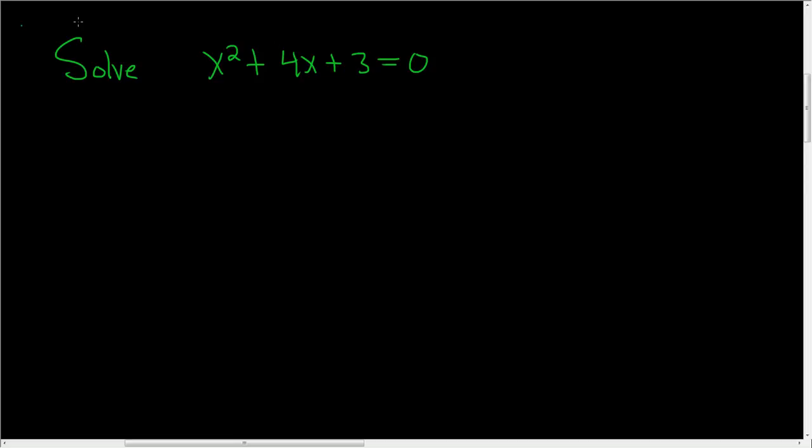Solve x squared plus 4x plus 3 equals 0. Let's go ahead and try this. Solution.